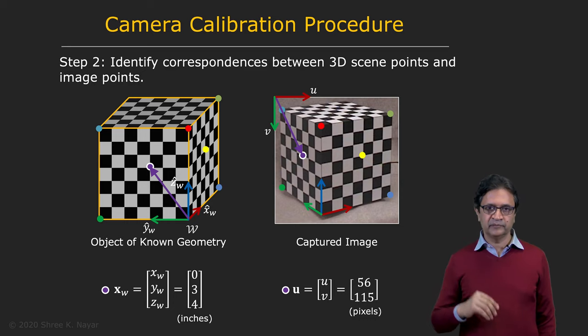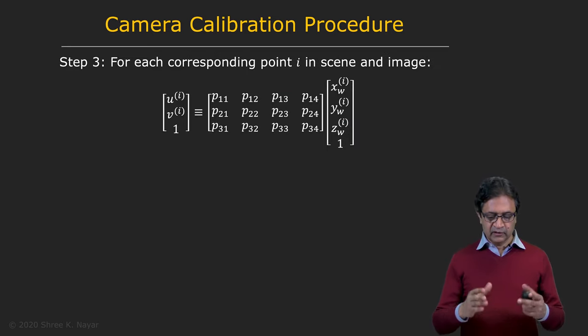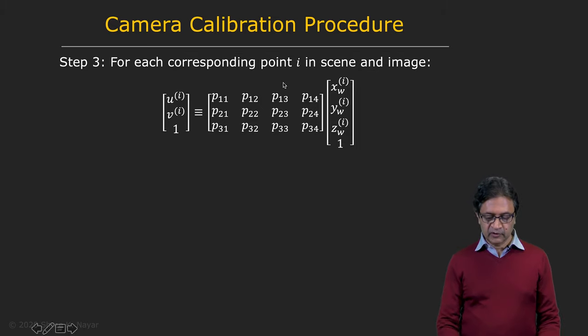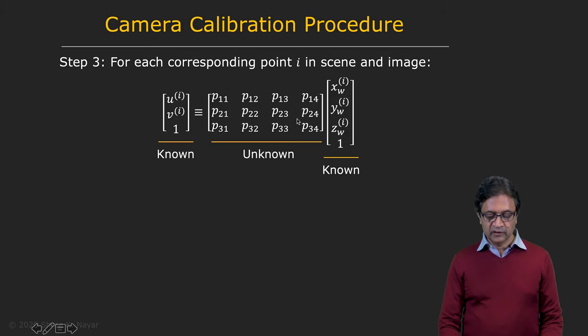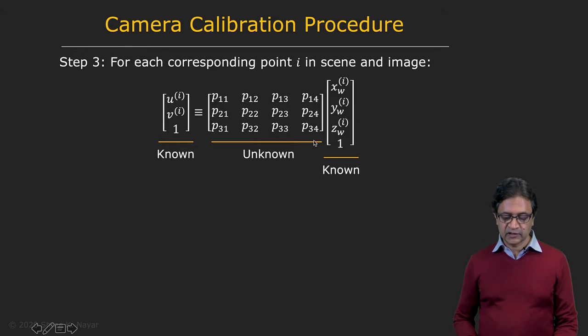If you take one of these points, you get through our camera model, linear camera model, you get a mapping from the point in 3D, the world coordinate frame, to the image coordinates right here, 2D, using our projection matrix. This is what we are interested in finding. So U and X_W are known, but P is unknown. That's what we are trying to estimate.